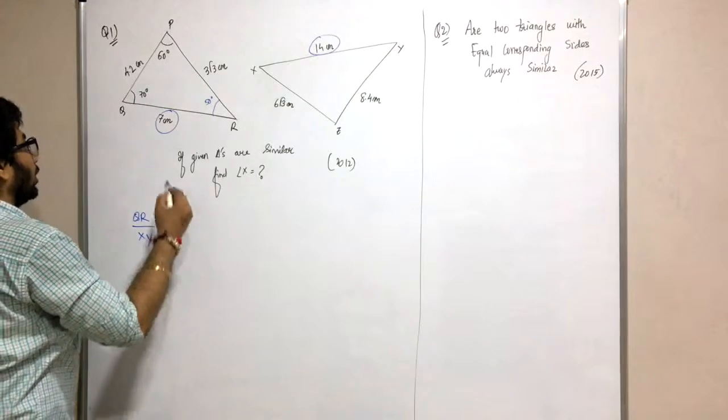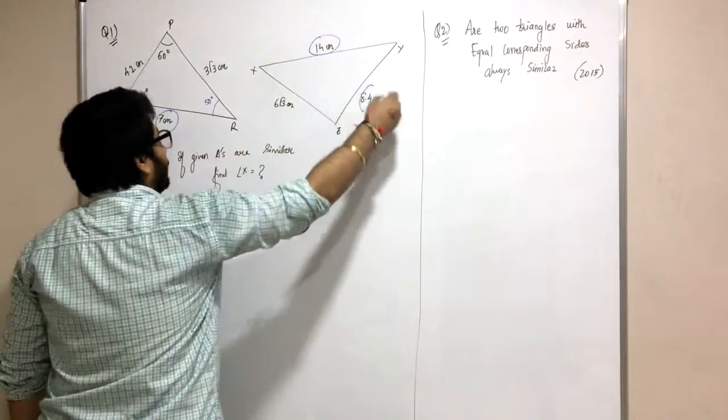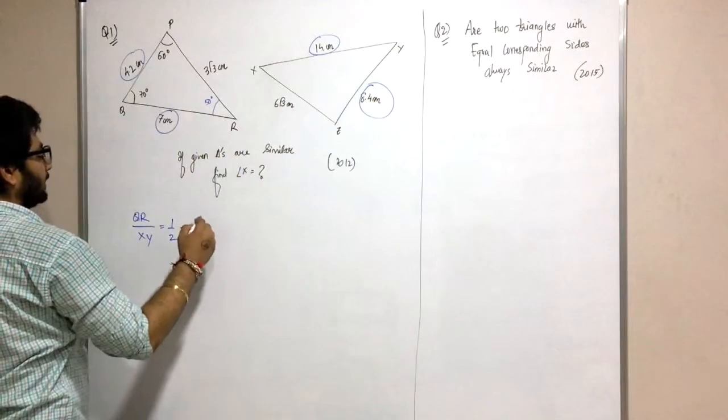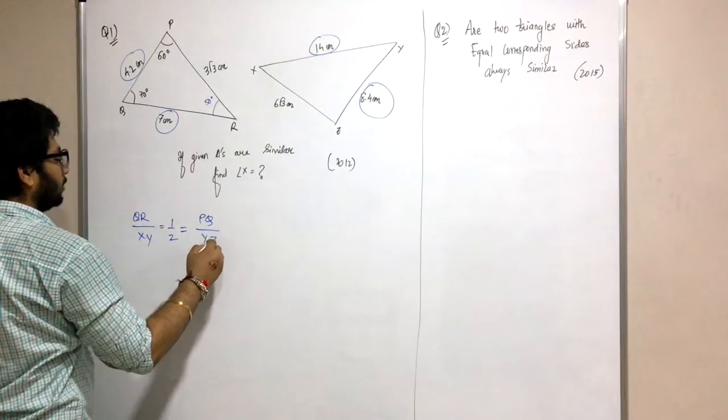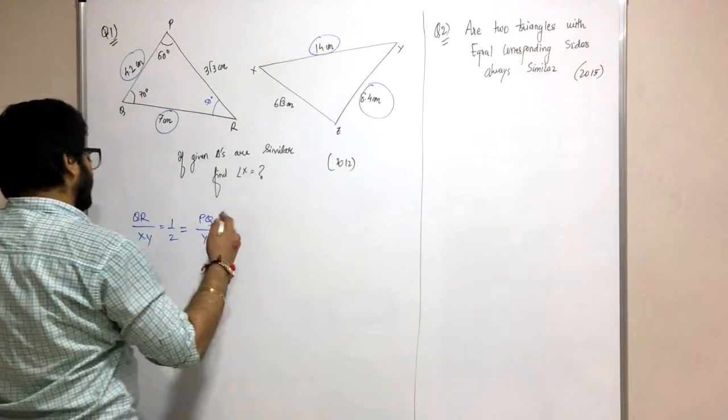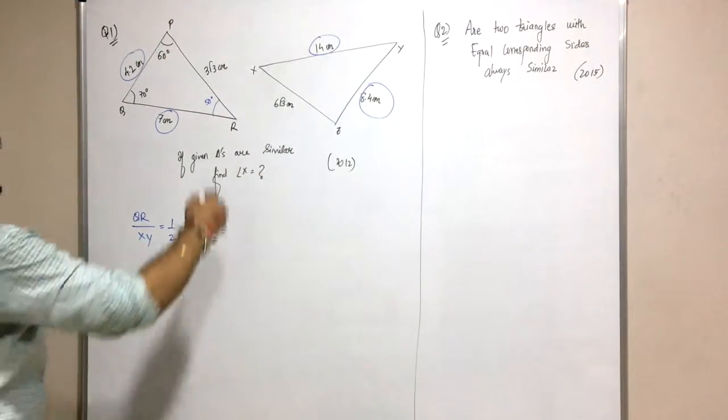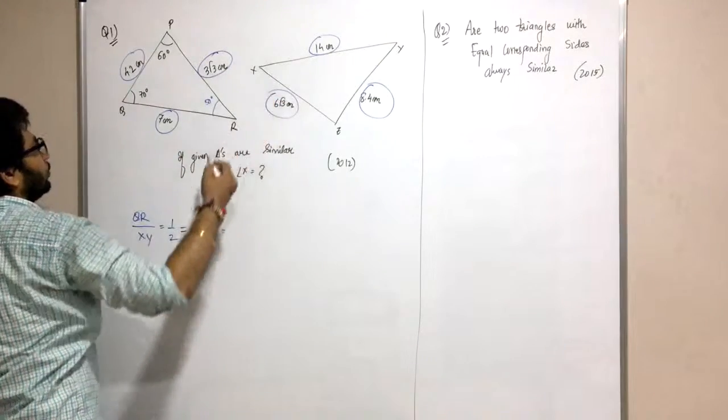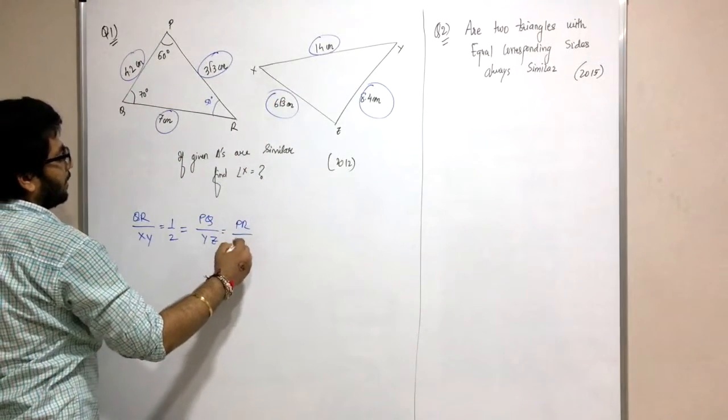Next, three root three is six root three, so PR by XZ. The ratio is half. Now the ratios are given and I can identify which sides correspond.